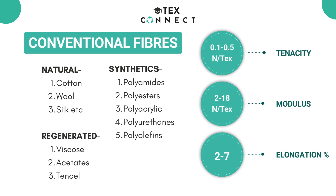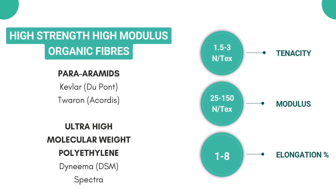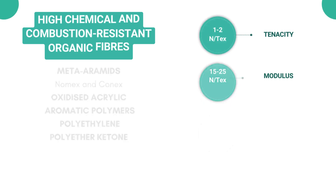Next up is high strength and high modulus organic fibers. These fibers are structured for specific industry applications. Examples include para-aramids like Kevlar and Poron, and ultra-high molecular weight polyethylene like Dyneema and Spectra. Since they are used for heavy industrial applications, they have higher tenacity and modulus. The tenacity is 1.5 to 3 newton per tex, modulus ranges from 25 to 150 newton per tex, and elongation is 1 to 8 percent.